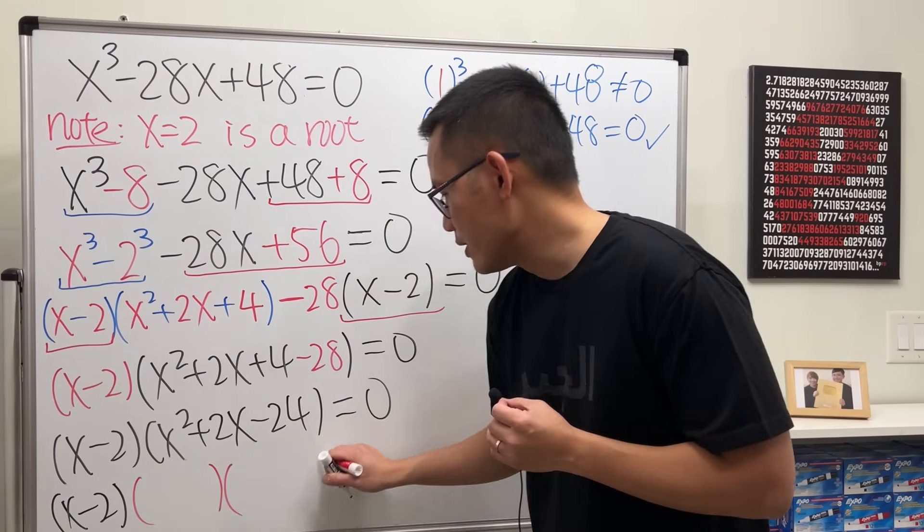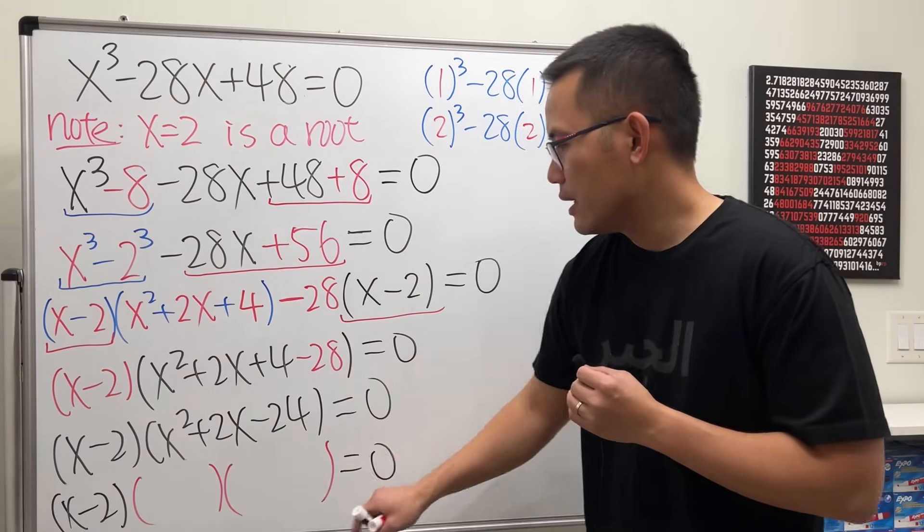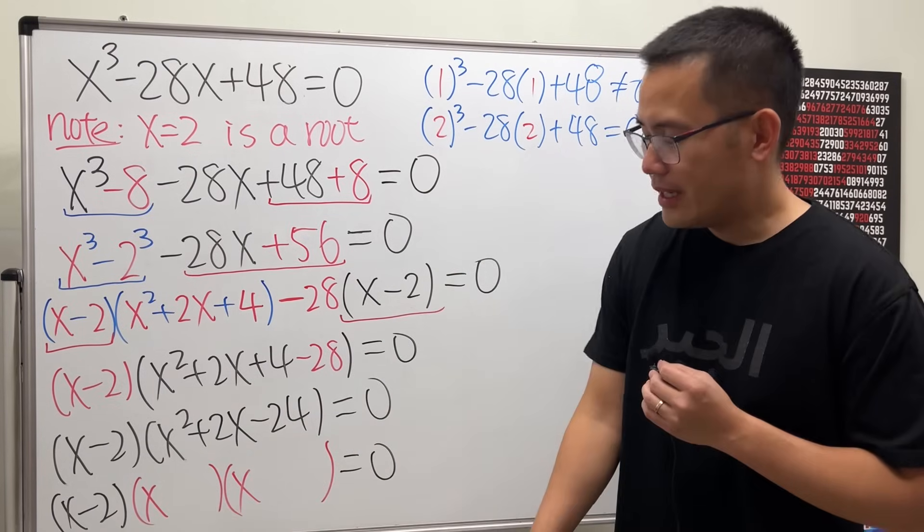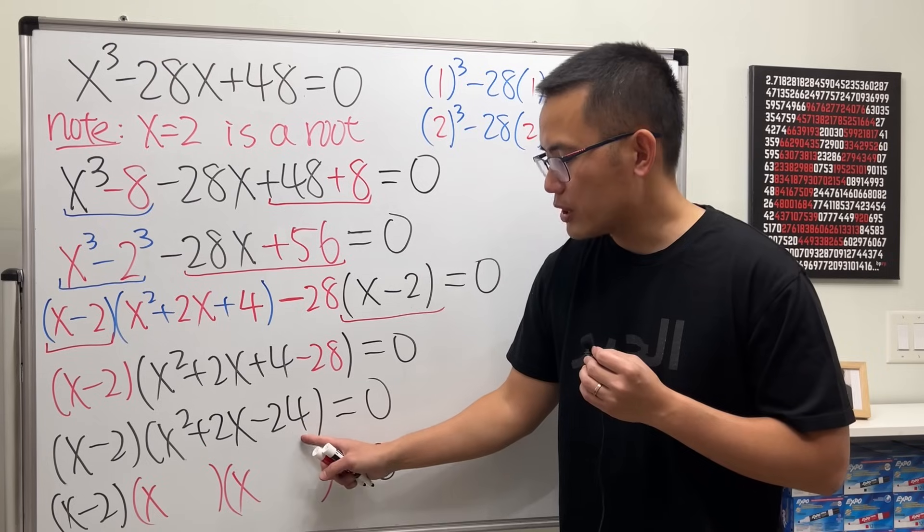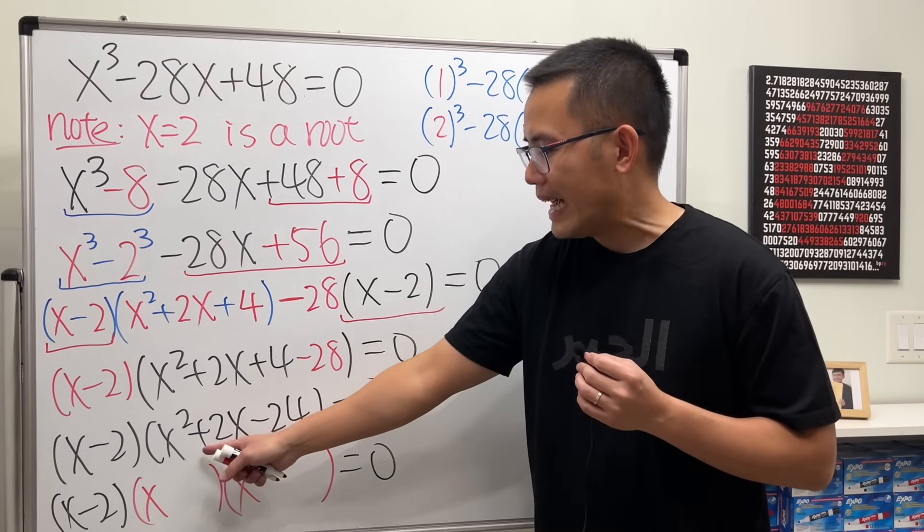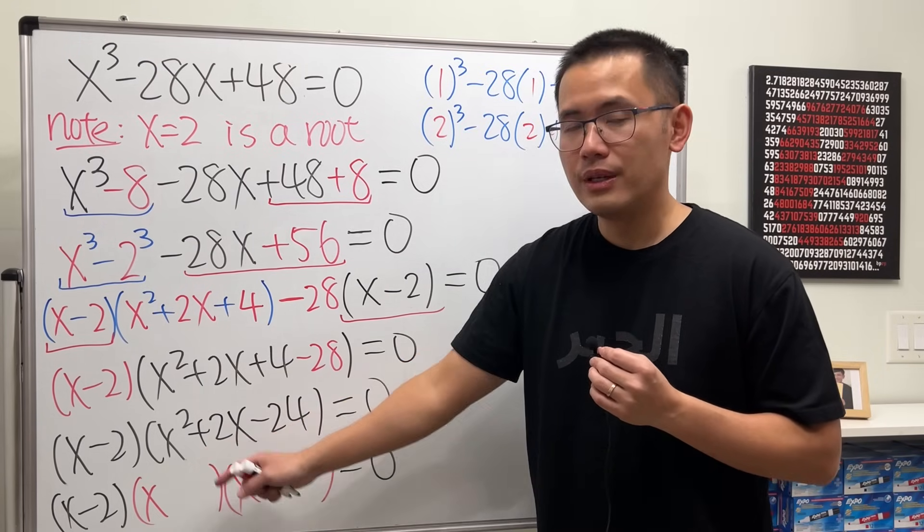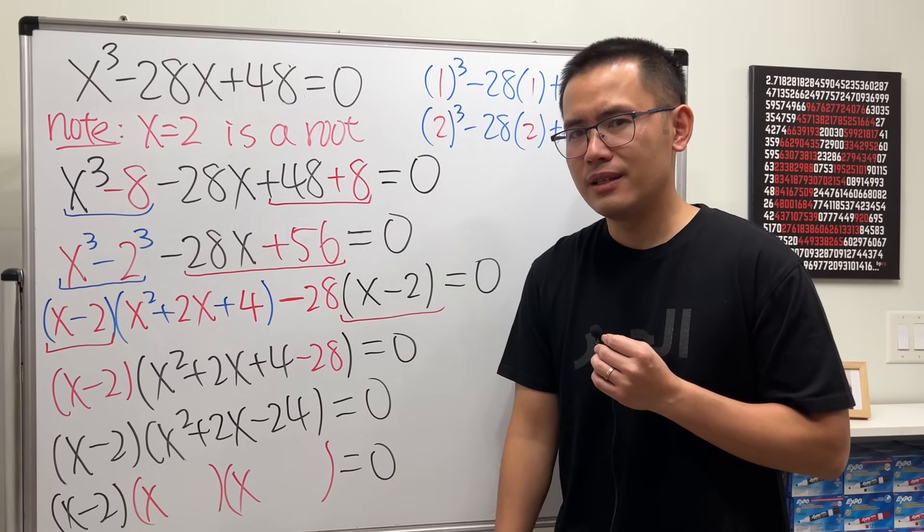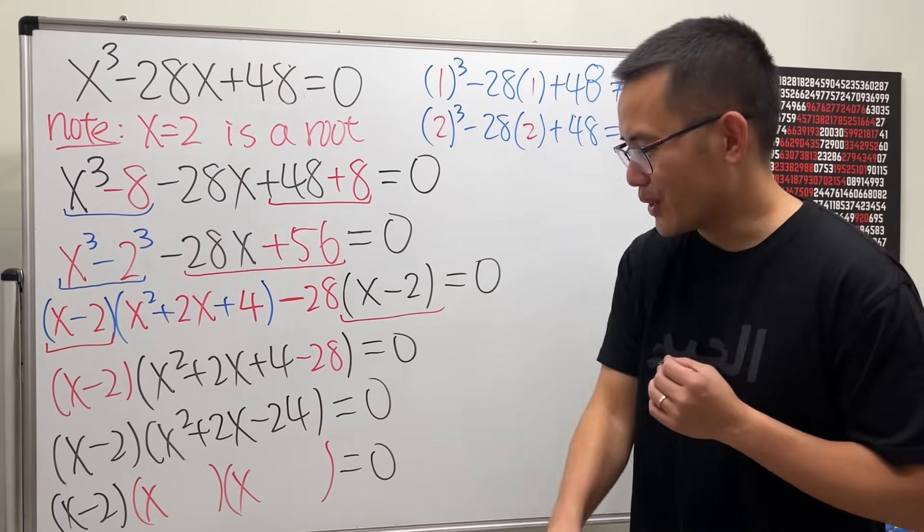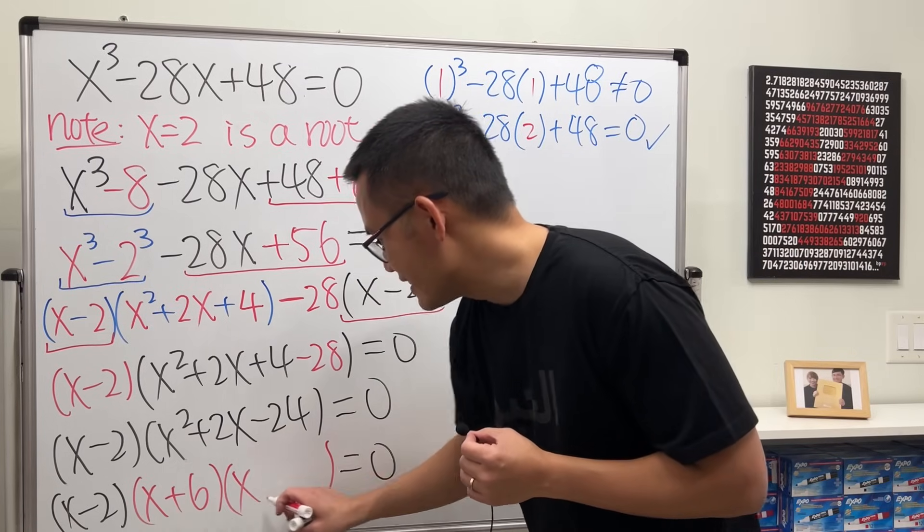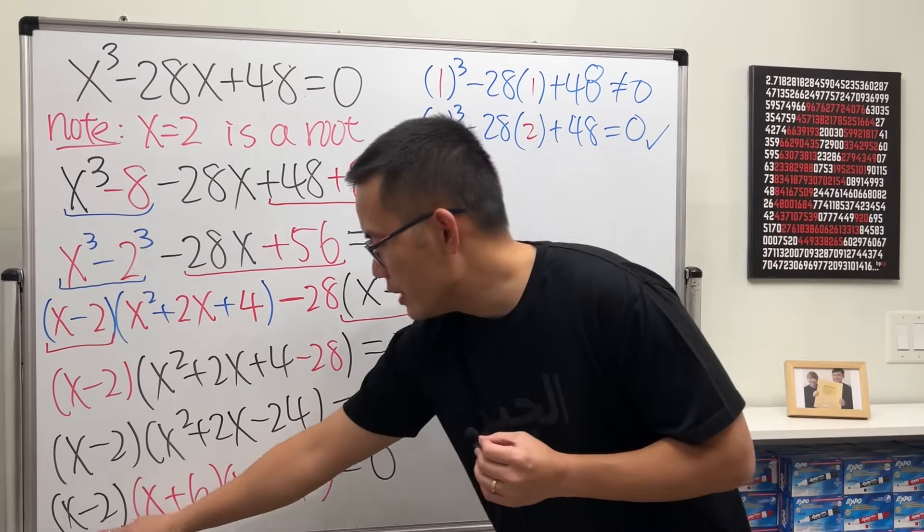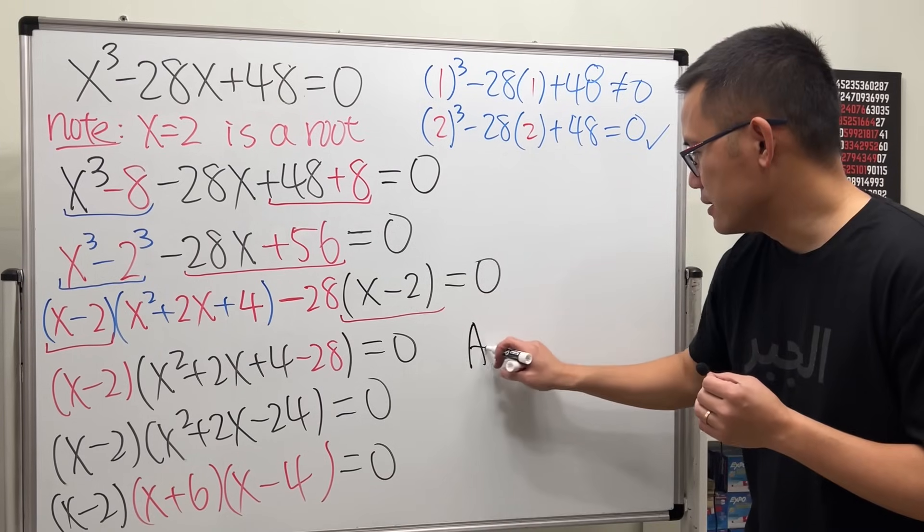So let's put down two sets of parentheses. To get x², we need x times x. Then we have to think about two numbers: they multiply to negative 24, and together they add up to 2. So the correct combination is 6 and 4, but which one is negative? Negative 4. Good. So (x + 6)(x - 4). From here you can see the answers.